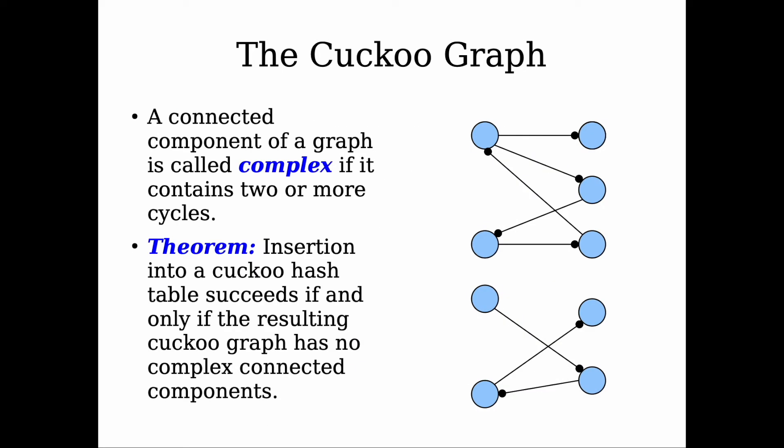So we will have infinite evictions because we have k plus one items for k slots—there's an excess that we need to store. So let's have a definition here: a connected component of a graph is called complex if it contains two or more cycles.